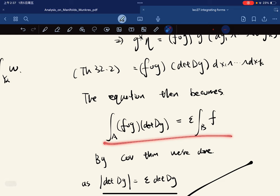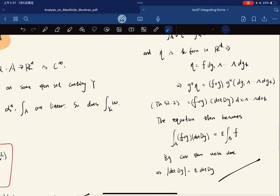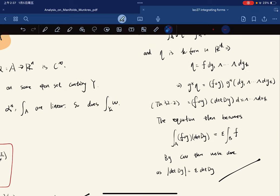But this is true by change of variable theorem, because G is a diffeomorphism. And we know this is true, so we're done. So under re-parameterization it only differs by sign.